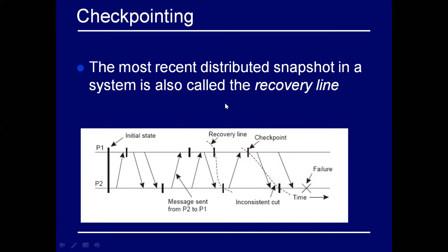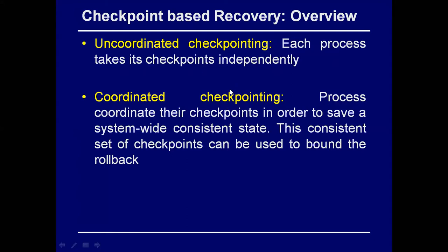We have three kinds of checkpointing protocols, but in our course we'll cover two: coordinated and uncoordinated checkpointing. Coordinated means multiple processes coordinate with each other via message passing to take a global checkpoint together. Uncoordinated means each process takes checkpoints independently. With three processes, each decides its own checkpoint frequency — P1, P2, and P3 independently choose when to checkpoint.